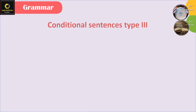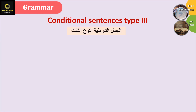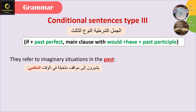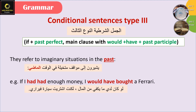Now, conditional sentences type 3. The form: the if-clause uses the past perfect, and the main clause uses would + have + past participle. This form must be memorized. Usage: they refer to imaginary situations in the past — the same as type 2, but the imaginary situation is in the past. For example: If I had had enough money, I would have bought a Ferrari — meaning if I had had money in the past, I would have had a Ferrari at that time.